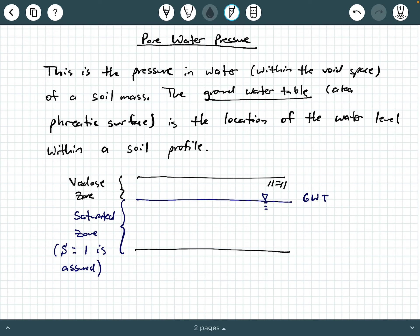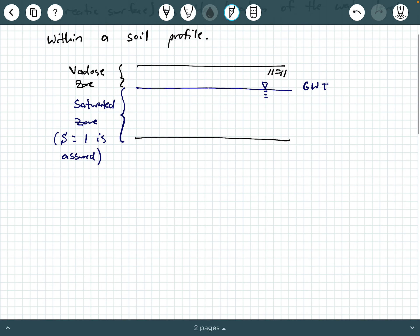So here are some underlying assumptions when we're doing these kind of calculations. The pore water pressure, which we typically use the letter U, is zero at and above the groundwater table.